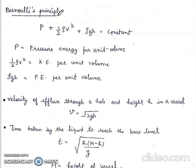Bernoulli's Principle. P plus half rho v squared plus rho gh is equal to constant. P is pressure energy per unit volume. Half rho v squared is kinetic energy per unit volume. Rho gh is potential energy per unit volume.